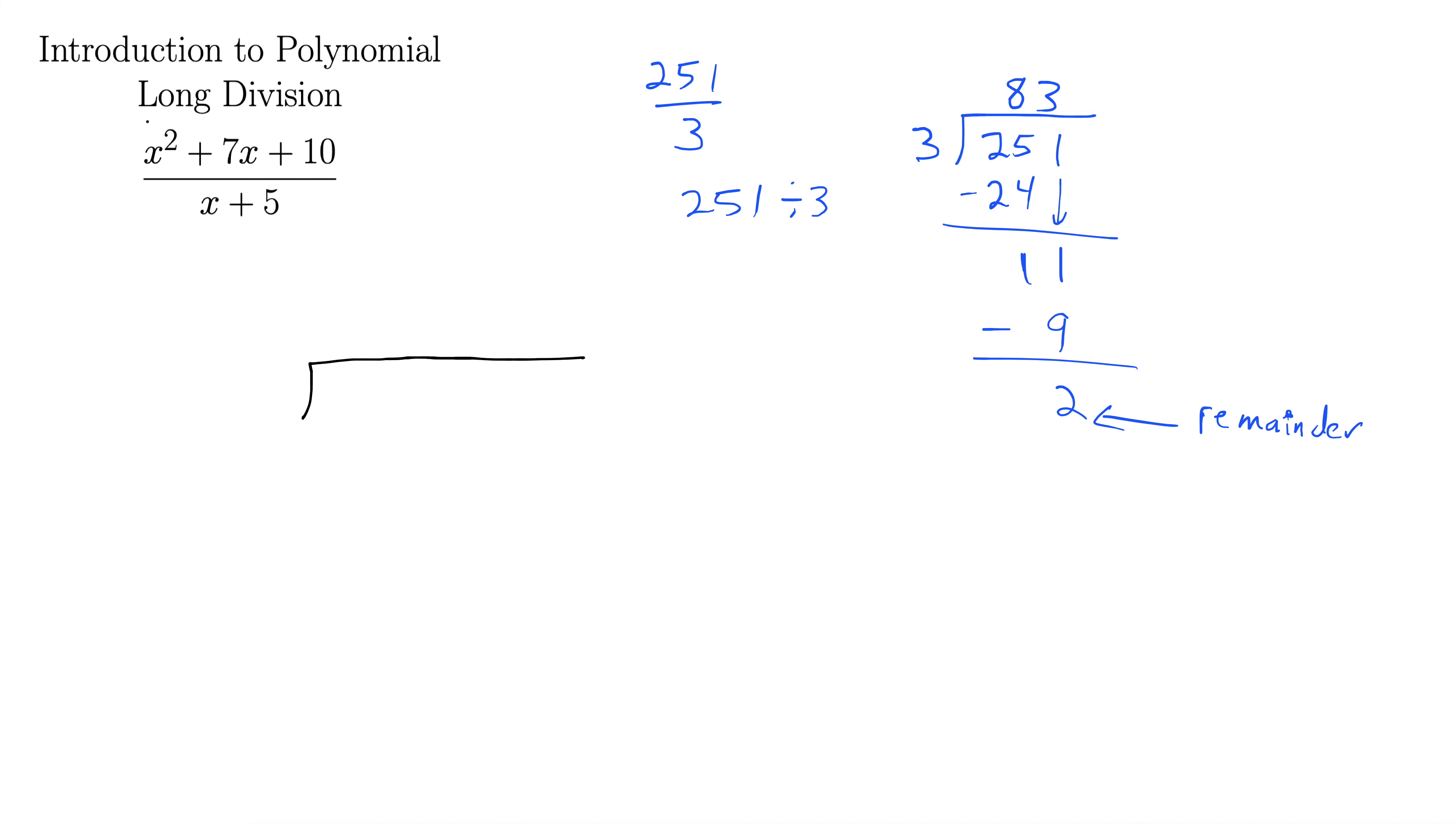And then the thing on the top, the numerator part here, goes inside of this division symbol. x squared plus 7x plus 10. And then down goes out, x plus 5. So whatever's in the denominator becomes, we call this the divisor out here.